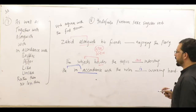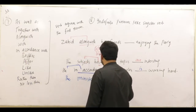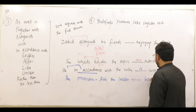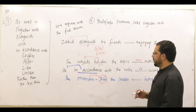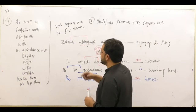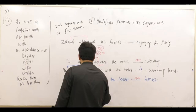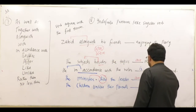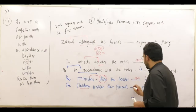Similarly: the ministers, like the leader, dash honest. Here we have the word 'like'. Before 'like' we have 'ministers'. Ministers are plural, so we will put 'are honest'. Likewise: the children, unlike their parents, dash non-serious. The children — we have plural — so: the children, unlike their parents, are non-serious.